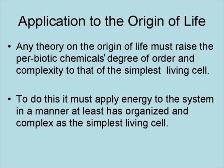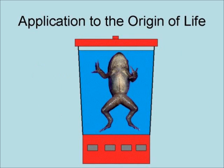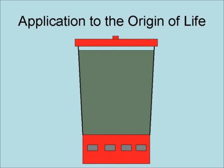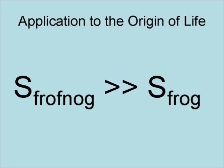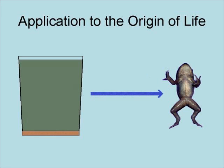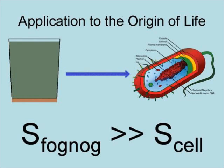To illustrate this, let's take a frog and a blender. Put the frog in the blender and turn it on. In a matter of seconds, you will have a blender filled with all of the chemical components needed to make a frog in the form of a frog nog. The frog was converted into a frog nog, whose entropy is much, much greater than the entropy of a frog. However, to get life from non-life, you have to turn the frog nog back into a frog — or at least turn frog nog into a single-cell bacterium. The entropy of the frog nog is still much, much greater than the entropy of a single-cell bacterium.